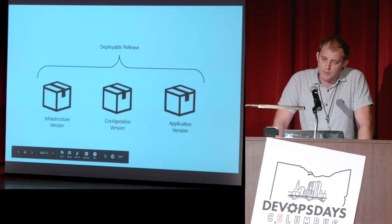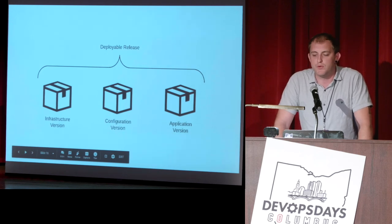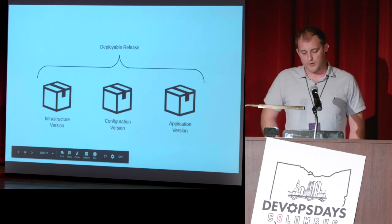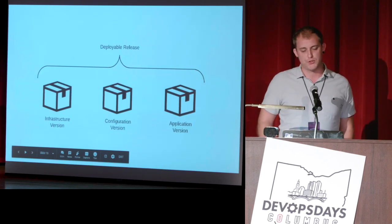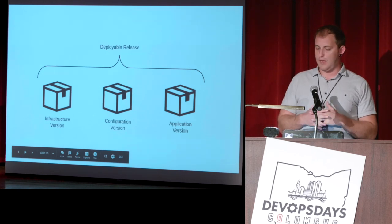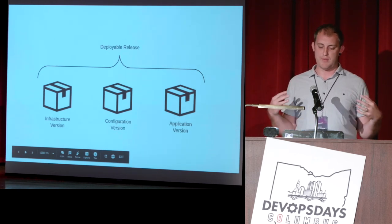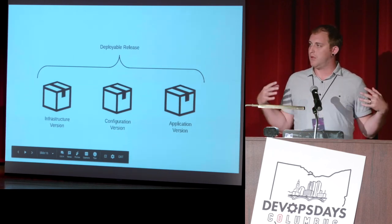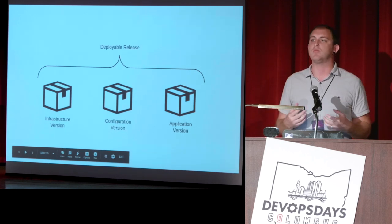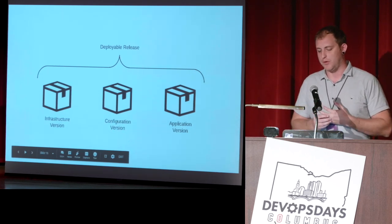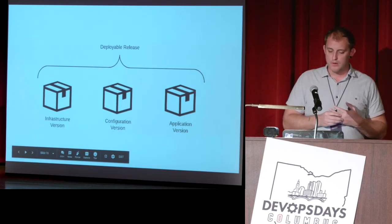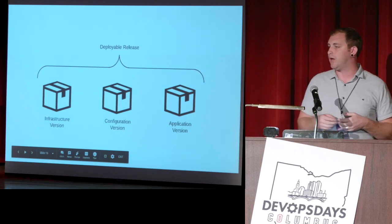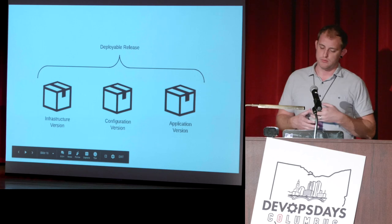An environment is usually made up of a few different packages: the infrastructure package, the configuration version, and the application version. All of these together make up what I call the release. If I'm able to take the infrastructure, the configuration, and the application and put them all together, I can reliably rebuild the same environment from the ground up. Sometimes you'll see all this in the same repo — configuration might be a Dockerfile, and infrastructure we'll get to in a moment.